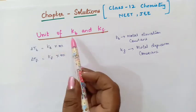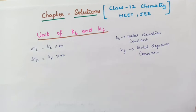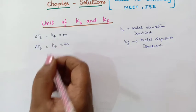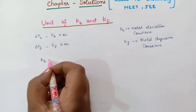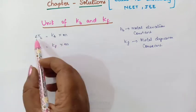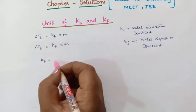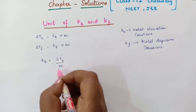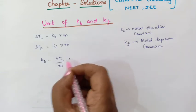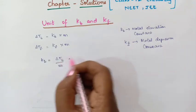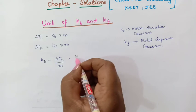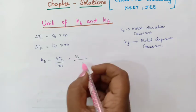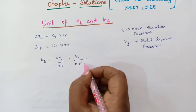Students, the unit for Kb and Kf will be the same. So let us see how to derive the unit for this. That is Kb is equal to delta Tb divided by M. M is the molality. So delta T is nothing but temperature. Temperature we are taking in Kelvin divided by molality.